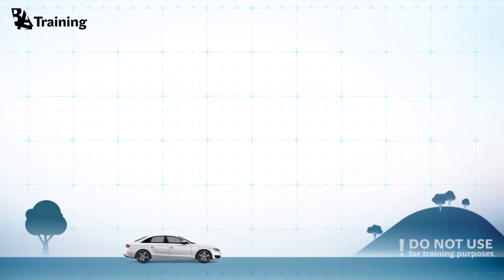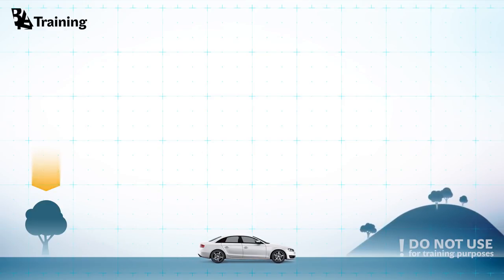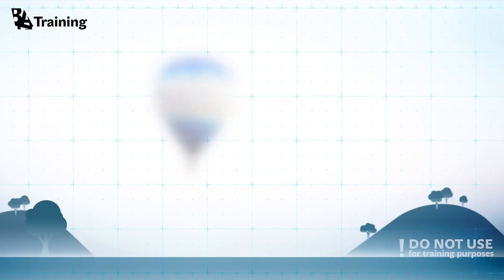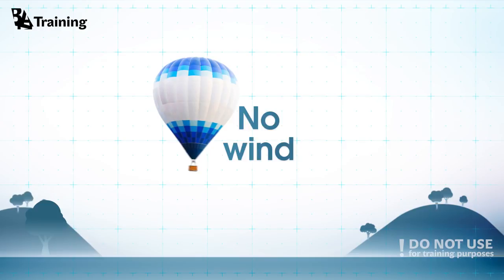For example, a tree nearby. Now let's imagine we are enjoying a flight in an air balloon. If there is no wind, the balloon would not move and just stay in one place.